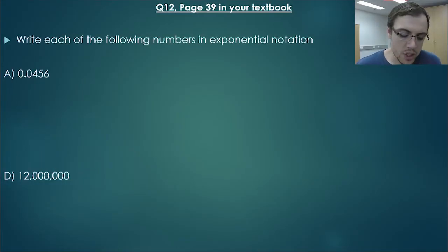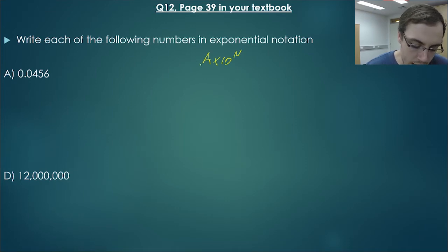Let's move on now to question 12, page 39 in your book. Write each of the following numbers in exponential notation. Don't worry about exponential notation—that means the exact same thing as scientific notation. There's no difference between the two. So let's look at part A: 0.0456. Remember the formula that we're after is A times 10 to the power of N. A must be a number between 1 and 9. So 0.0456 is not a number between 1 and 9. If we move the decimal point over 1, that gives us 0.4, still not a number between 1 and 9. So we move it over once more: 4.5, now we're getting somewhere. So we have 4.56 times 10.